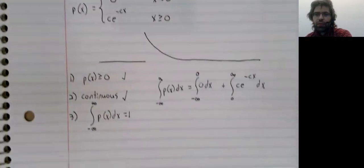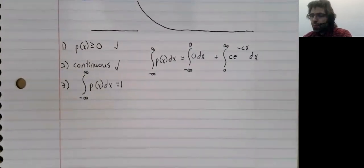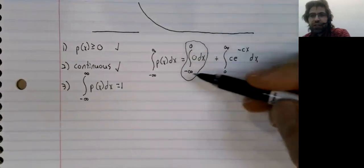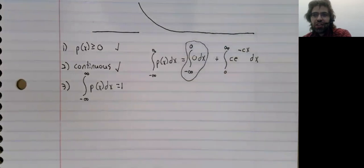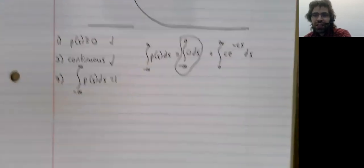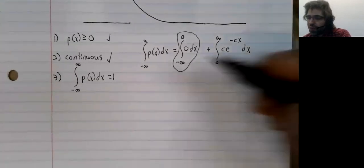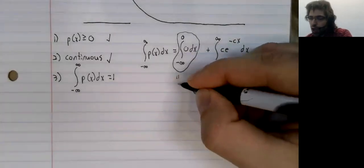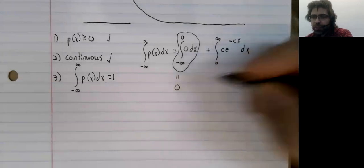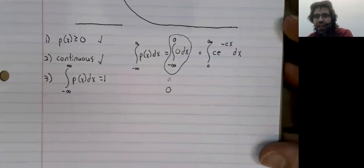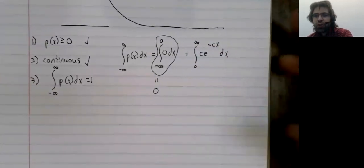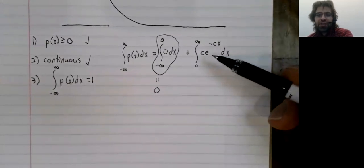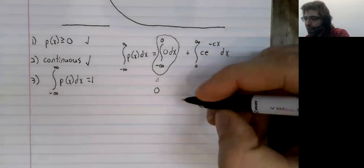Now we could do this formally, I mean we could rewrite this as a limit and take the antiderivatives and so on, but the integral of zero is always zero. Nothing interesting happening there. So let's go over and look at this integral in more depth.